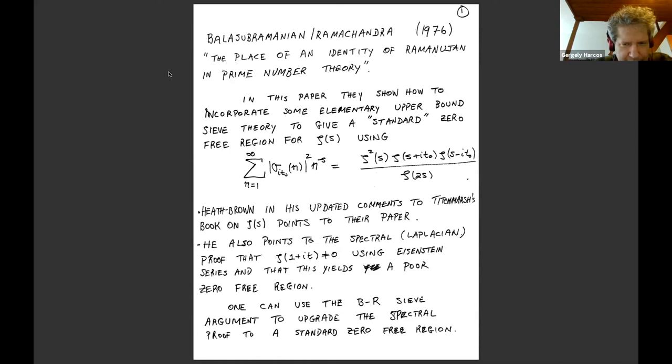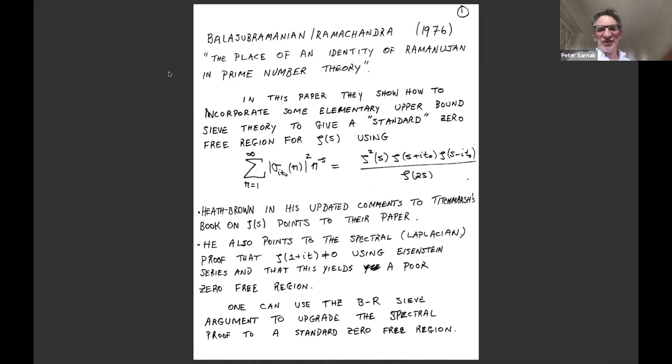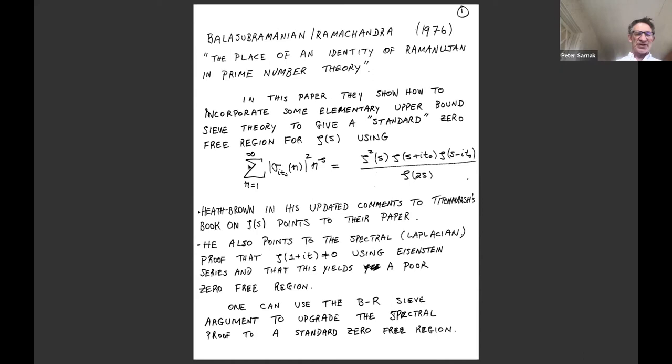I want to start with a paper of Bala and Ramachandra from 1976, with the beautiful title 'The Place of an Identity of Ramanujan in Prime Number Theory.' It's a paper which has only two Math Reviews and it's an extremely important paper. I'll go through a little bit of the history.